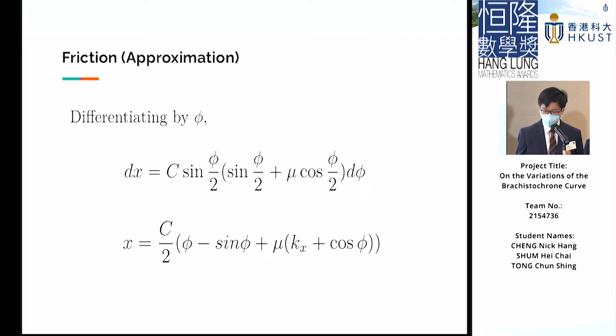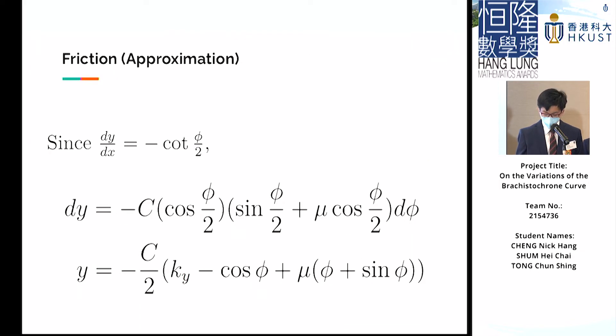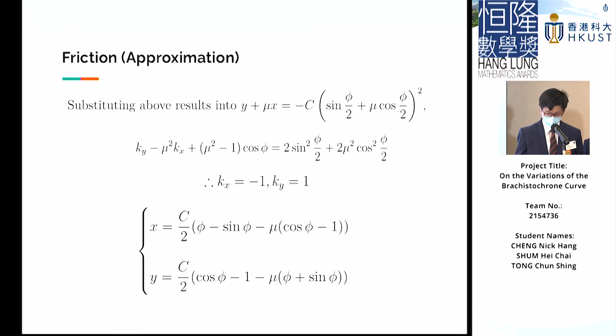We then apply a trigonometric substitution. We take the derivative of the whole equation with respect to φ, and solve for x in terms of φ here, with a constant of integration k1. Substituting the result back into dy/dx, we can solve for y in terms of φ, with a constant of integration k2. Substituting back the expression for y + μx, we can solve for both k1 and k2. Hence, we have obtained our final answer.